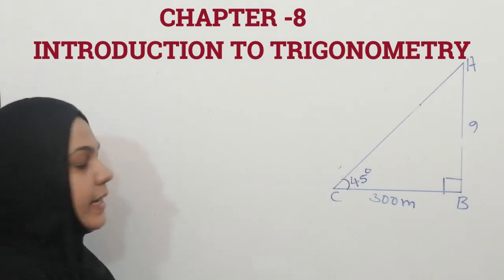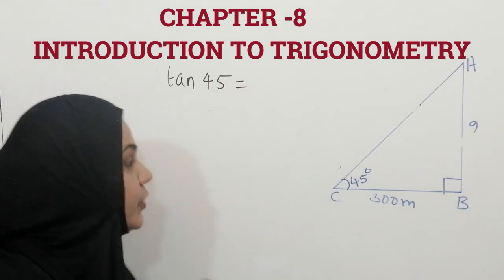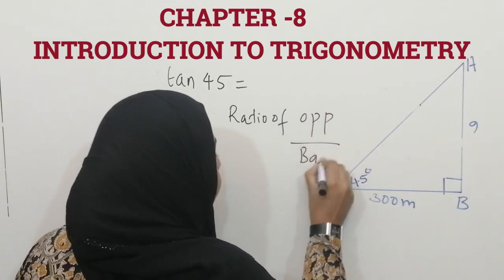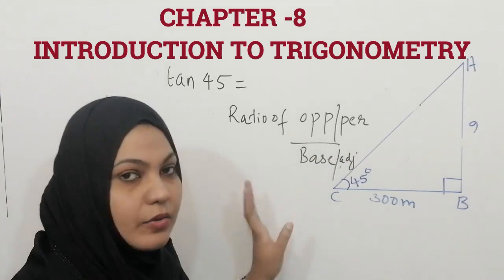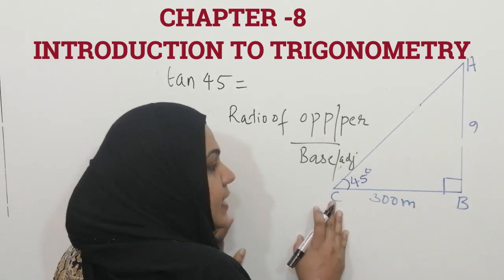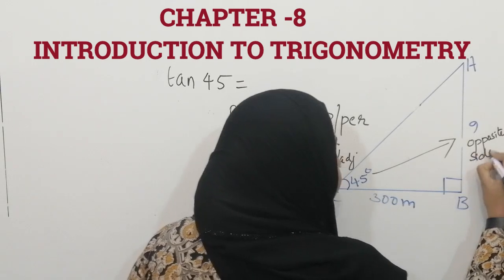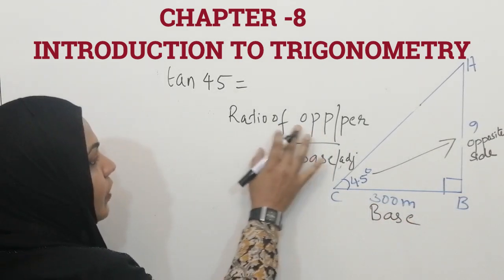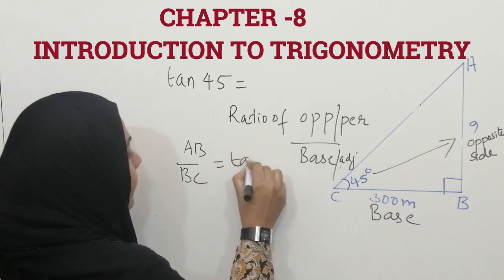I am using tan here. Tan means it is the ratio of opposite to base. Instead of opposite you can also write perpendicular, and instead of base you can write adjacent. In this triangle, the side opposite to the reference angle is called the opposite side, and the side which contains the 90-degree angle and the reference angle is called the base. So tan equals opposite over base — that is AB over BC.